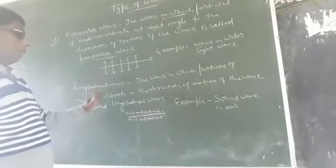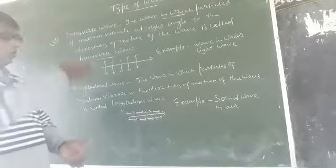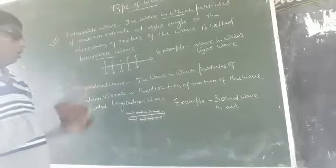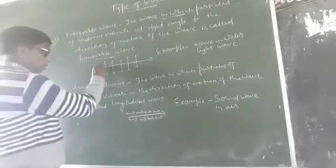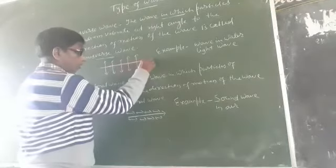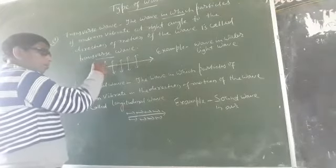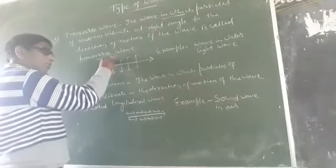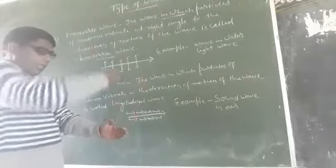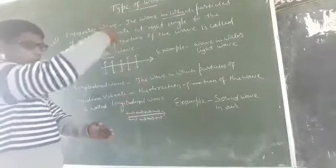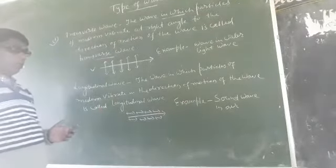The wave in which particles of the medium vibrate up and down, that is perpendicularly, is called a transverse wave. This is the direction of motion of the wave, and the particles of the medium vibrate up and down at 90 degrees — at right angles. So the wave travels in this direction while particles vibrate up and down. This is known as a transverse wave.